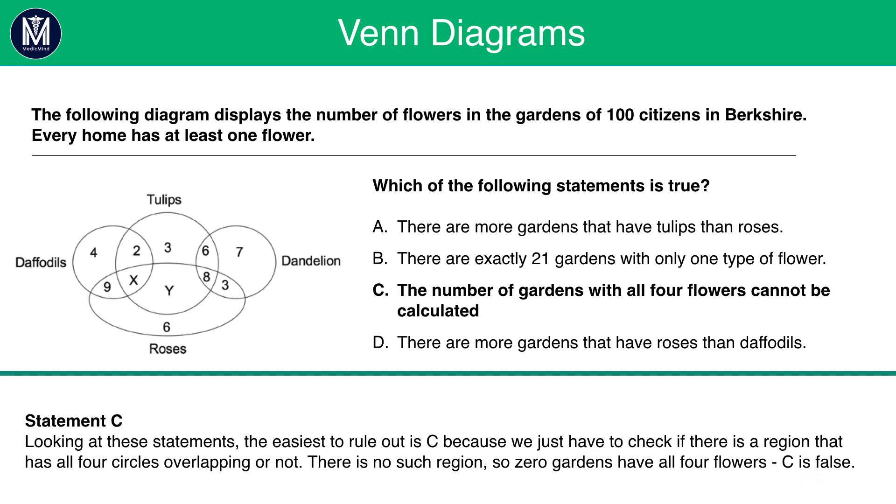Looking at these statements, the easiest to rule out is C because all we have to do is check if there is a region that has four overlapping circles or not. There is no such region here. Therefore, we know that zero gardens have all four flowers. C is therefore false because we know that the answer is zero and it can therefore be calculated.